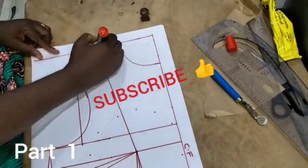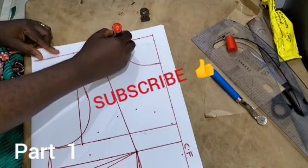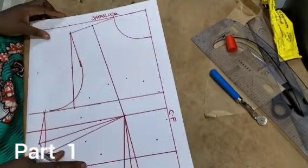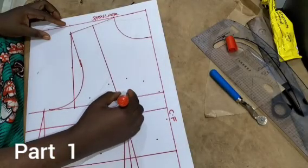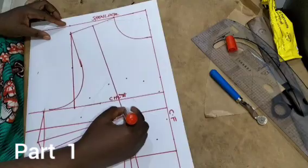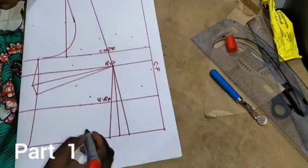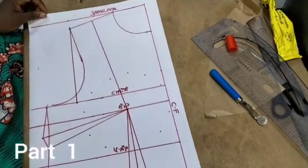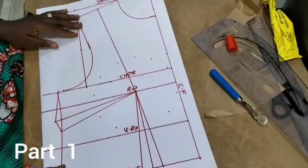Right here I've already drawn my basic bodice pattern as you can see, and I've done the necessary things you are supposed to do: the necessary lines which is our chest line, the bust points, under bust points, and the waist line. If you don't know how to make a basic bodice, please you need to watch our basic bodice videos right here on this channel.